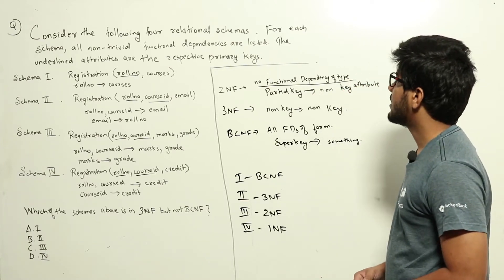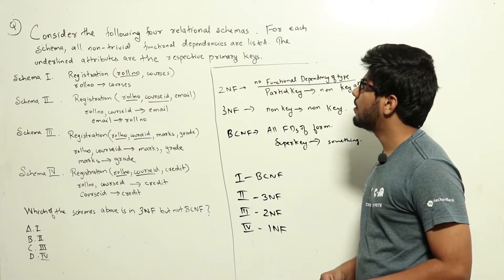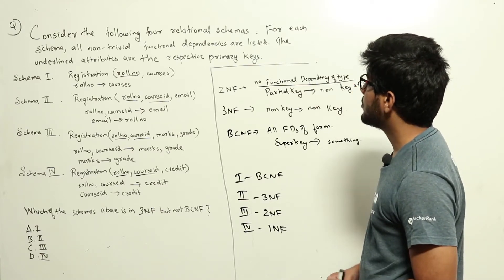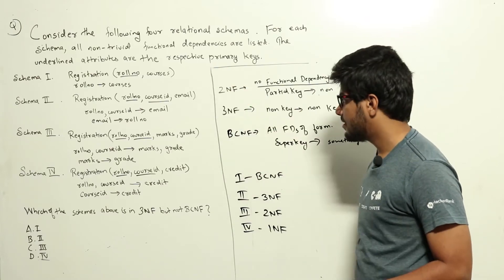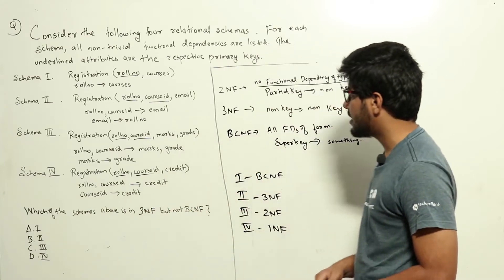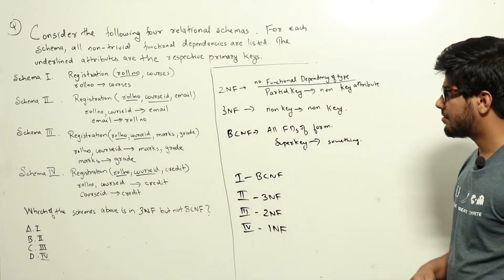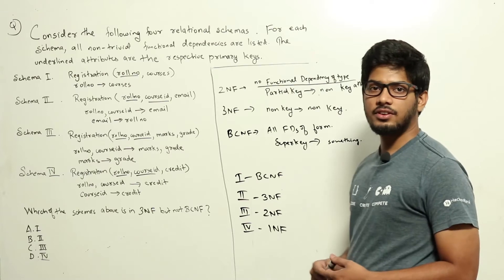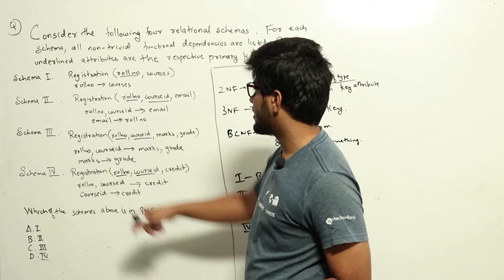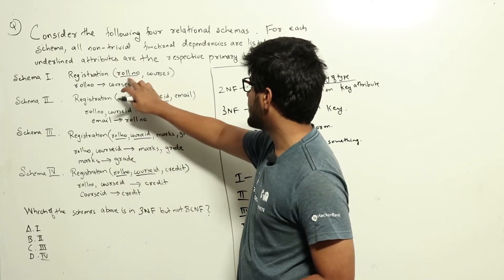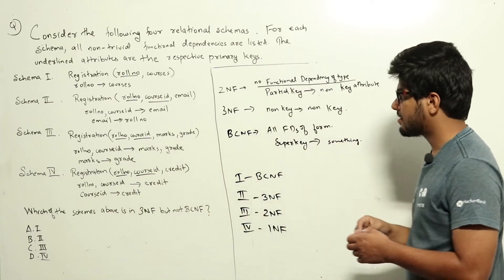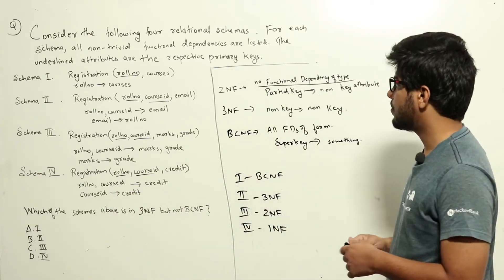Consider the following four relational schemas. For each schema, all non-trivial functional dependencies are listed. The underlined attributes are the respective primary keys. They are asking which of the schemas above is in 3NF but not BCNF. This is a question from the functional dependencies part in DBMS. We have been given four schemas with their associated primary keys and functional dependencies.